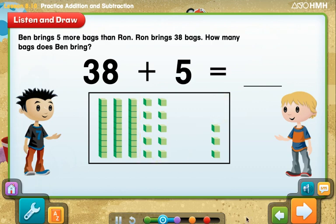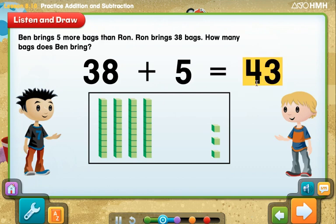Notice the new groups of ones. 10 ones make 1 ten. Notice the new group of tens and ones. Now find the sum by counting the tens and ones. There are 4 tens and 3 ones. So what number does the model show? It shows 43. 38 plus 5 equals 43. So Ben brings 43 bags.